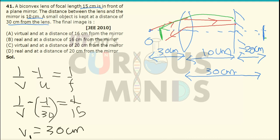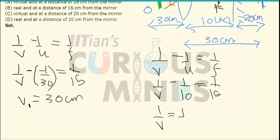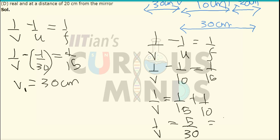Now for the second pass through the lens, since the rays are coming from the right-hand side, we use the lens formula again: 1/V − 1/U = 1/F. The object distance is positive (+1/10) since rays come from the right, and the focal length is +1/15. So 1/V = 1/15 + 1/10 = (2 + 3)/30 = 5/30 = 1/6, giving V = 6 cm.